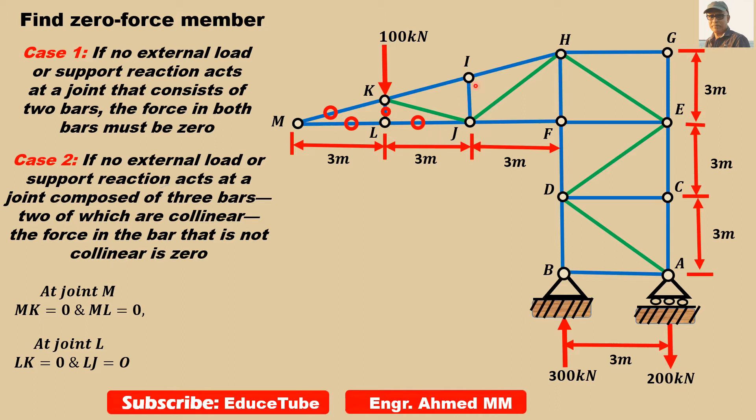Now let's move to this joint I. Let's take it in enlarged form. Here these two bars, IK and IH, are collinear, but this is not collinear.